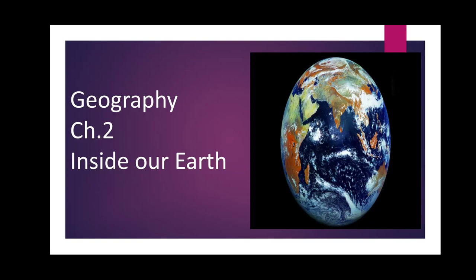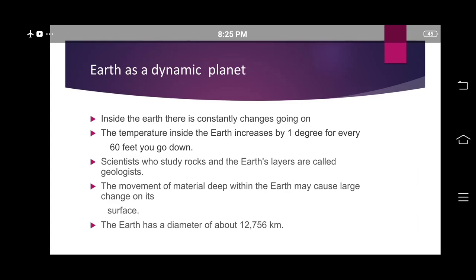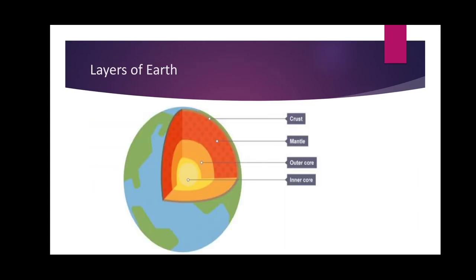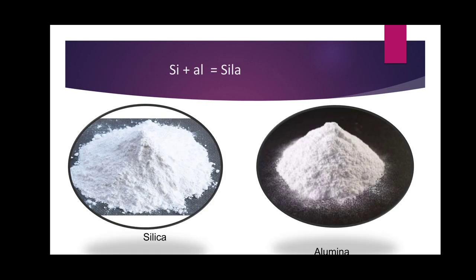Hello students and welcome back to my class. Today we are going to start with the second part of geography chapter 2, Inside Our Earth. Before starting, let's recall what we studied in the previous part. We studied that our earth is a dynamic planet which constantly undergoes changes inside and outside. The earth's interior is made up of three parts: crust, mantle, and core. We also studied the different compositions of each level along with the types of crust.